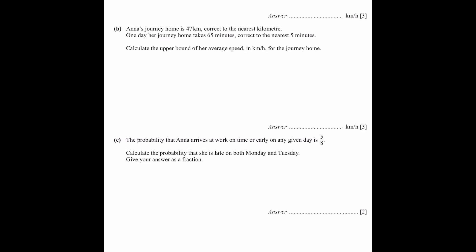First question: Anna's journey home is 47 km correct to the nearest km, and we will underline the important things. One day her journey home takes 65 minutes correct to the nearest 5 minutes. Calculate the upper bound of her average speed in km per hour for the journey home.